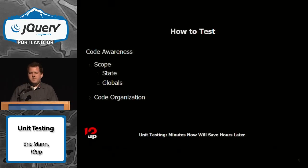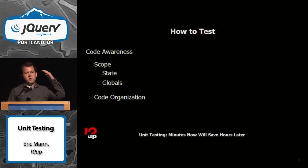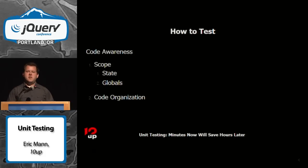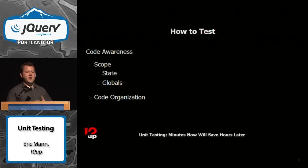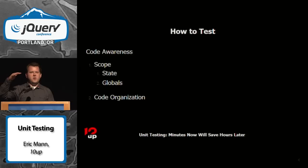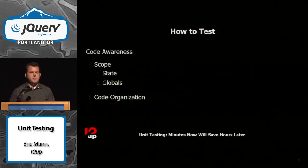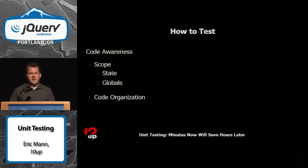Focus on code organization. A best practice my colleague Carl Danley introduced is placing all libraries and higher-order functionality at the top of your page, and everything that wires things together — binding event handlers, instantiating objects — at the bottom. This gives a clear delineation between code that provides tools and code that uses them. You can also avoid using the document ready event because if your object definitions are at the top and the wiring code is at the bottom, the DOM is already loaded.